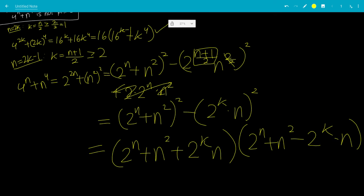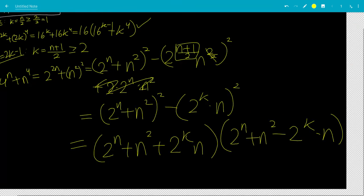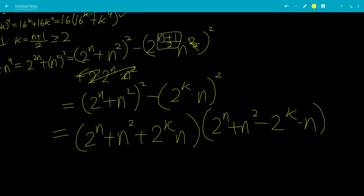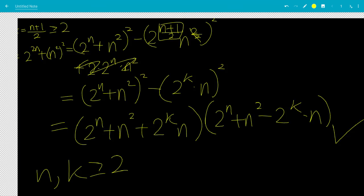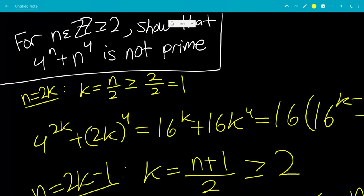k is an integer because n is odd, and both n and k are bigger than or equal to 2. This all checks out. So we've shown that the expression 4 to the n plus n to the 4th is not prime — it is composite. And that's the end of the video.